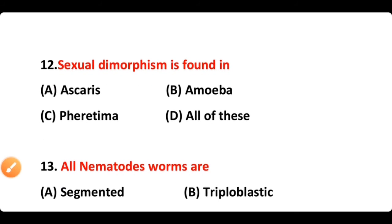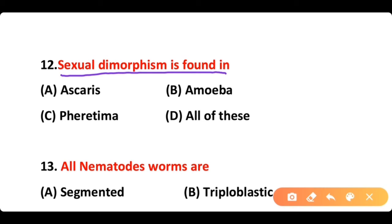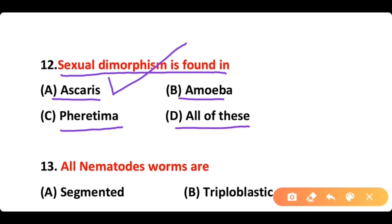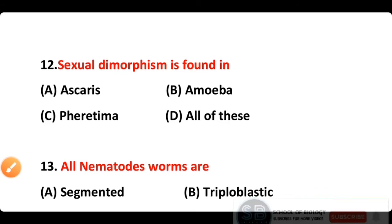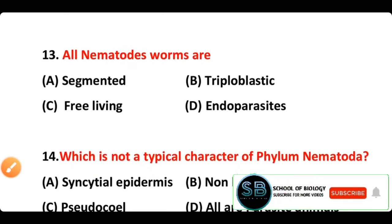Question 12: Sexual dimorphism is found in: A) Ascaris, B) Amoeba, C) Pheretima, D) all of these. The correct answer is option A. Sexual dimorphism is found in Ascaris because Ascaris is unisexual.